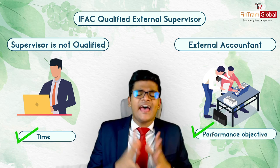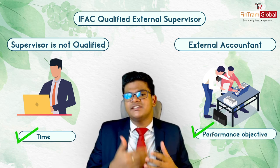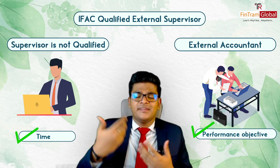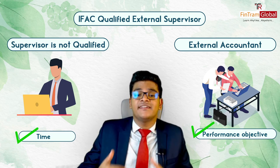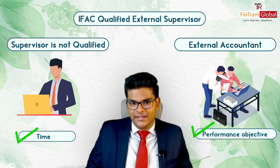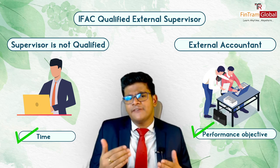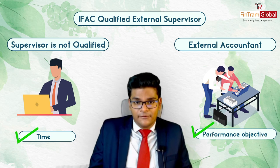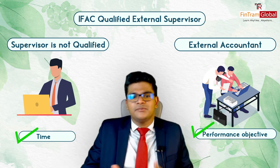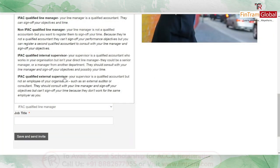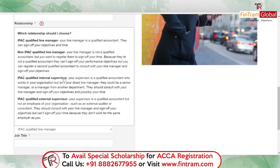A key aspect to understand regarding all these options is that the individual who signs off your PER — whether for time or performance objectives — should have an idea of the nature of the job you do. That's exactly why it's always great to find a direct line manager who is a qualified accountant. Of course, sometimes that's not under our control, so the other options are available.